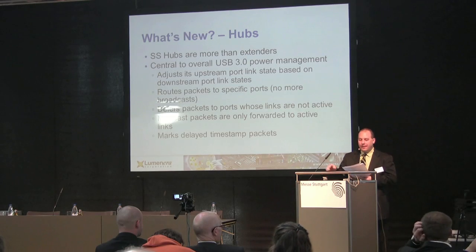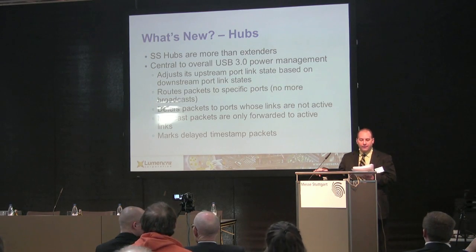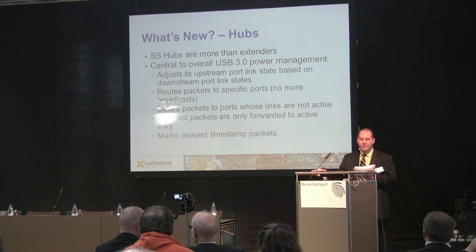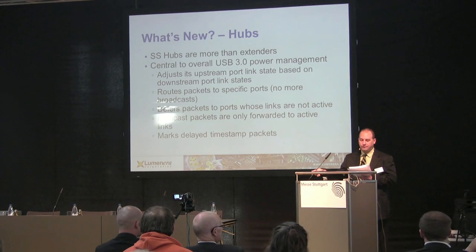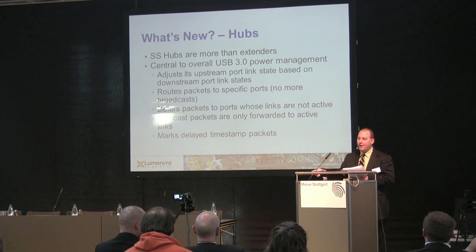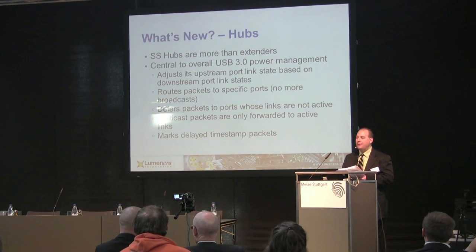With all these updates to signaling, devices, and cables, the standard USB hub also needed an overhaul. The USB 3 hub is now the central piece for managing power consumed across all USB devices. It monitors the power states of all downstream devices and adjusts its state accordingly, avoids broadcasting packets when possible by routing them to specific ports, and if multicast packets need to be sent, only sends them to active links — keeping inactive links sleeping to conserve power.